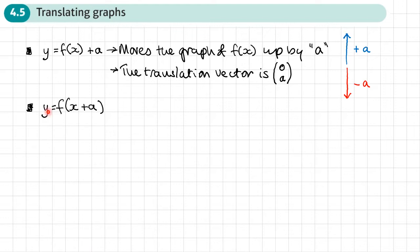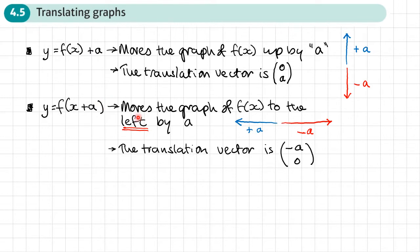The second translation is y equals f(x + a), where the a is inside the brackets. What this does is move the graph of f(x) to the left by a. You'd expect it to move to the right because that's the way x increases, but it actually moves in the opposite direction. So when a is positive the graph moves to the left, and when a is negative the graph moves to the right. This can be represented by the translation vector (-a, 0) — movement in the x direction but not in the y direction.